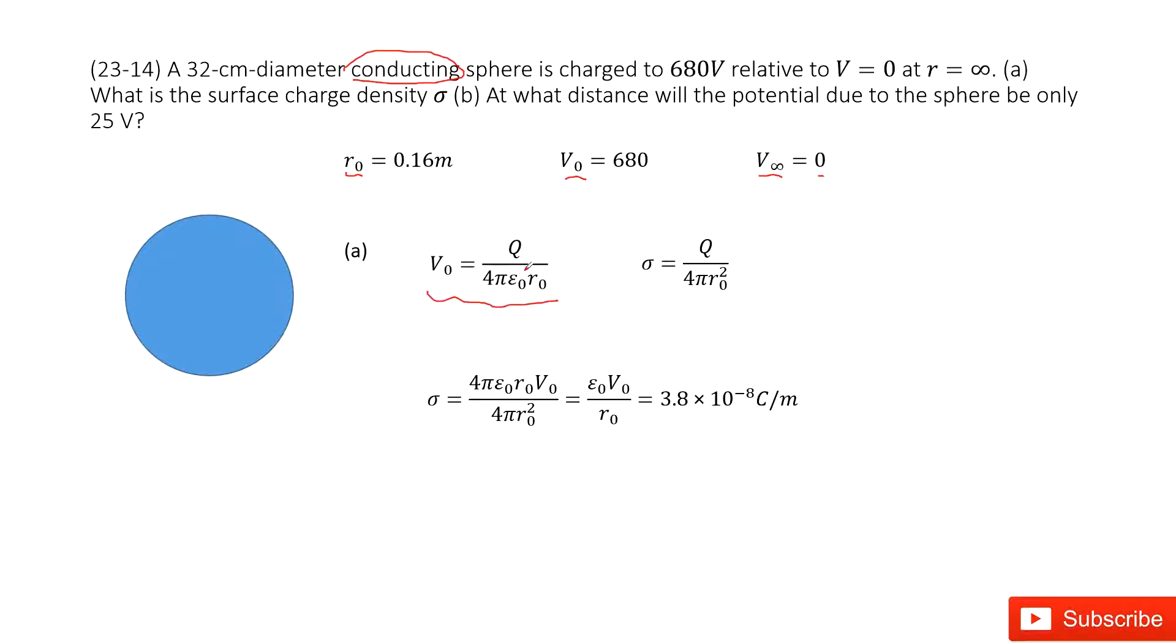For the spherical object, in this case, if you want to know the charge density, that means the total charge Q divided by the surface: σ = Q/(4πε₀r₀²).